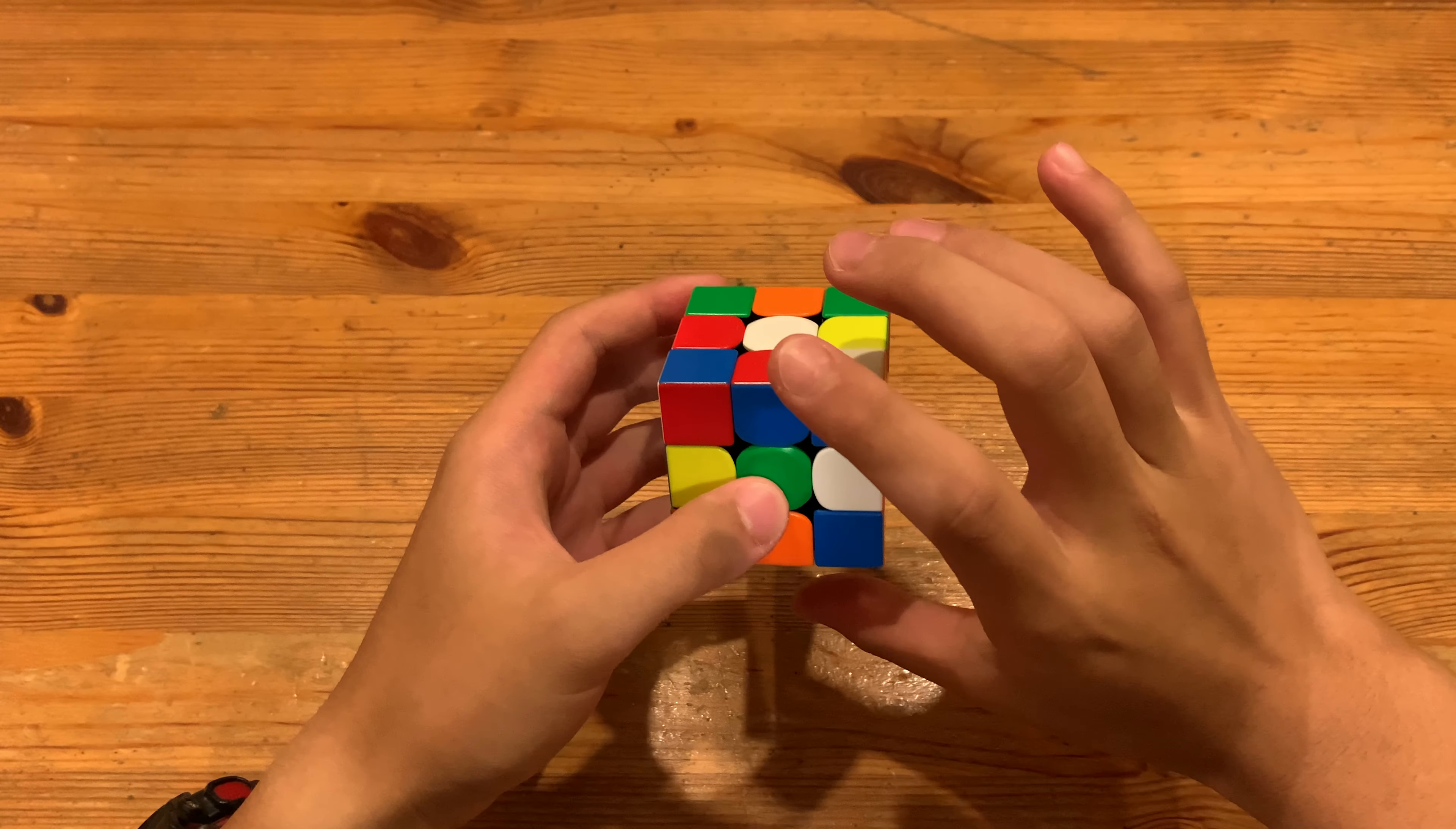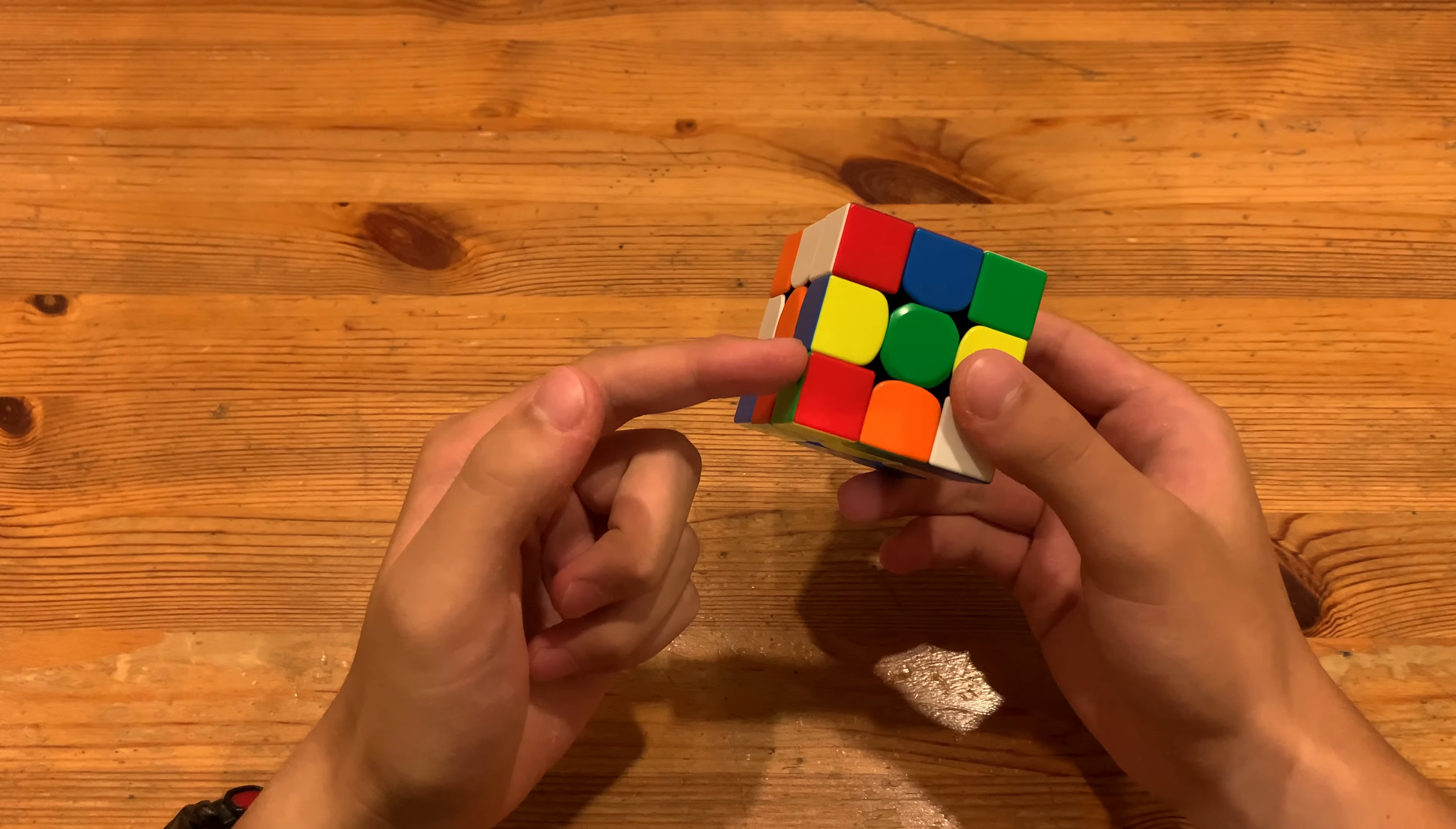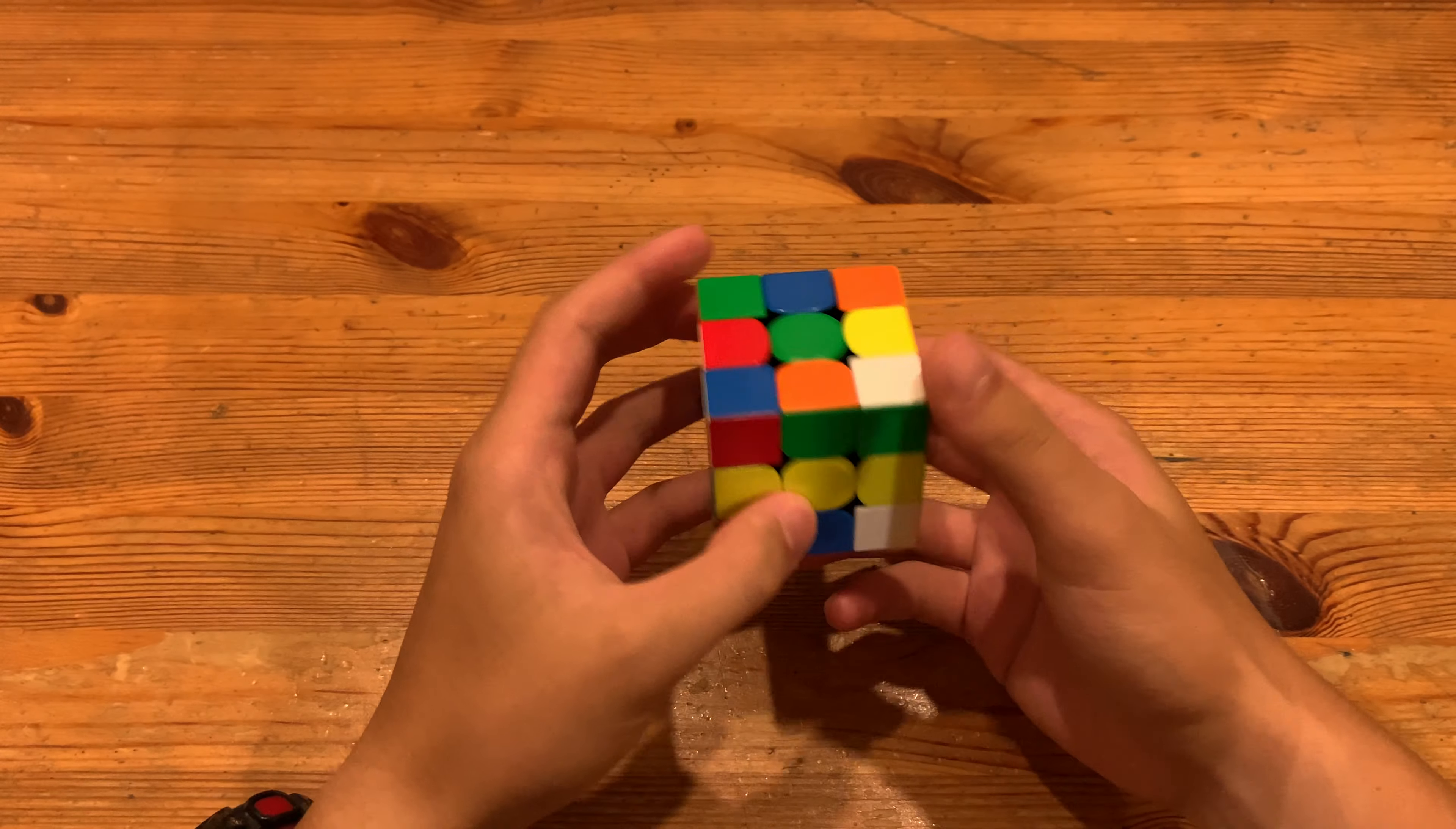What he did was X' to rotate this way, and then to solve the yellow cross, R' like that to move this cross over here. As you can see, if you do an M', you basically do the same thing as an R' L, so he just did an M' which inserted both of these like that, both of these opposite to each other.